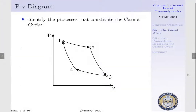Let us visualize this on a PV diagram. Going from state 1 to state 2, we have an isothermal heat addition process. From state 2 to state 3, we have a reversible adiabatic expansion process. From 3 to 4, we have an isothermal heat rejection process. And from 4 to 1, we have a reversible adiabatic compression process.